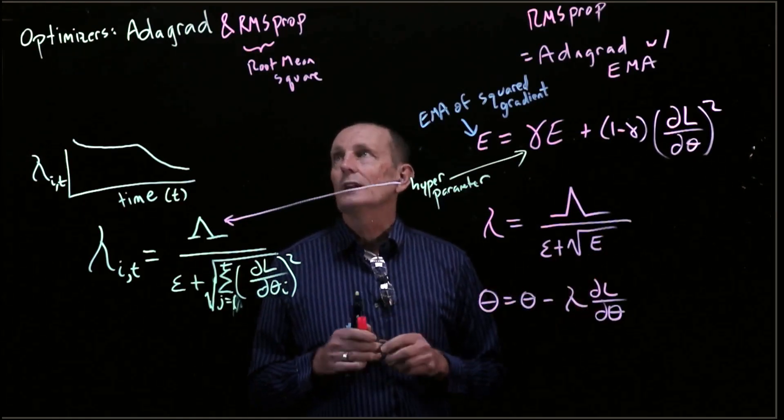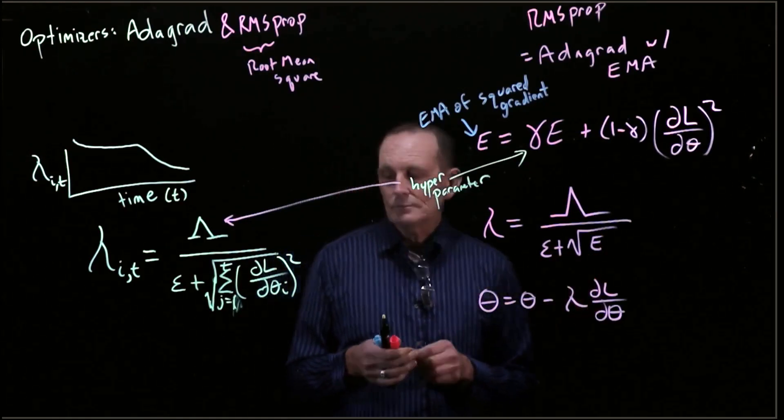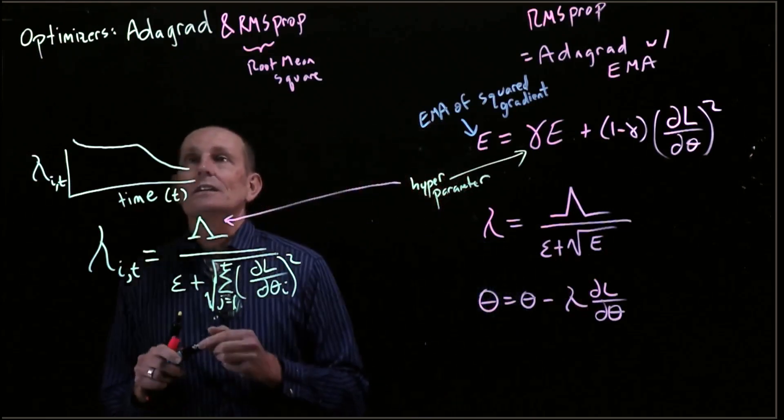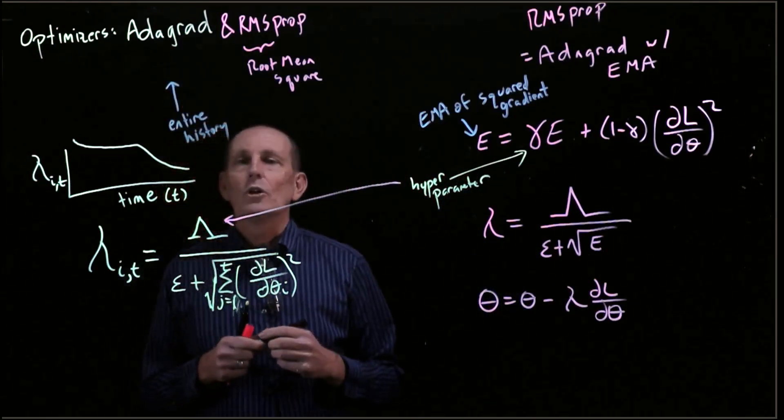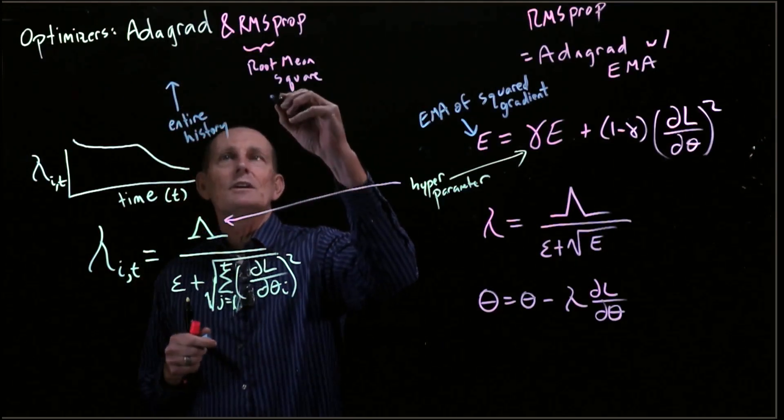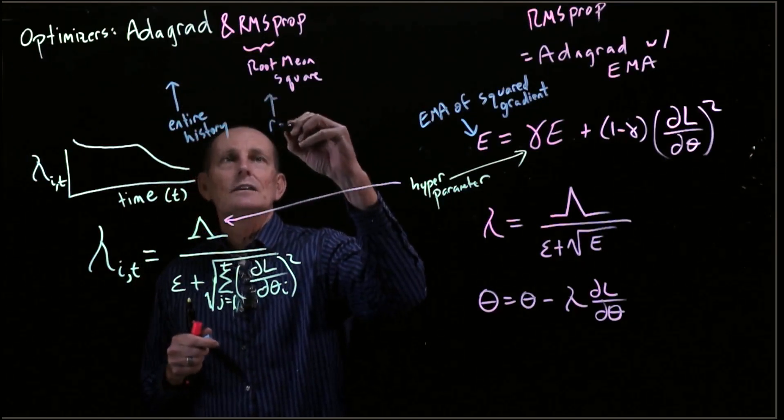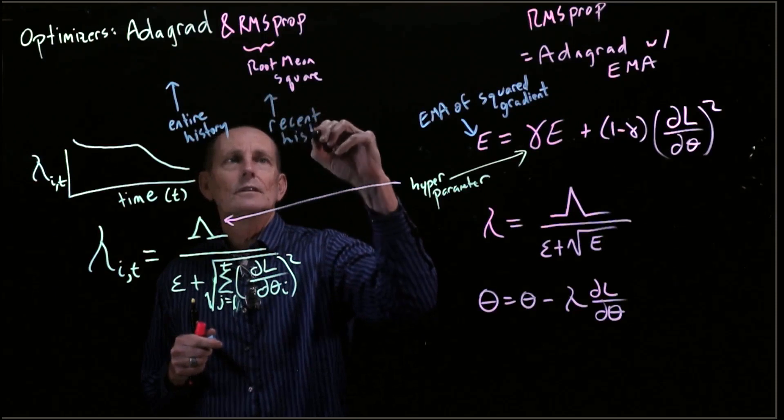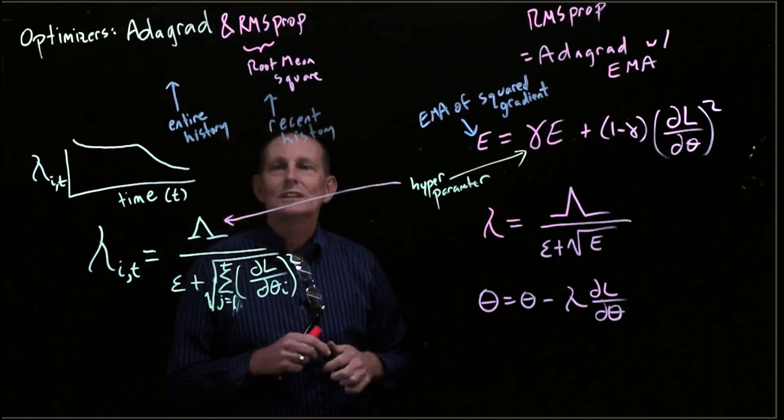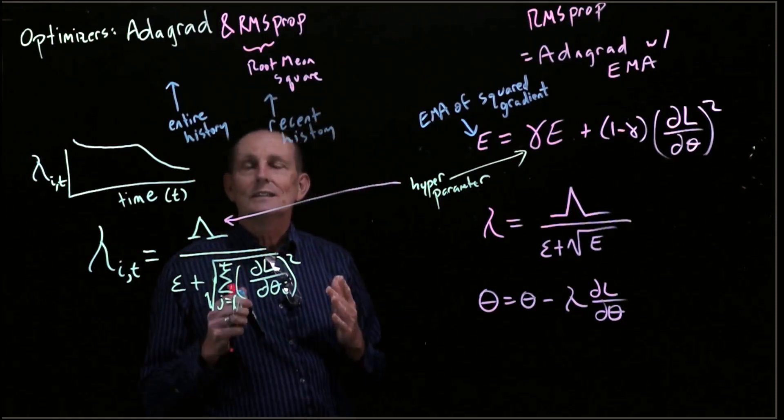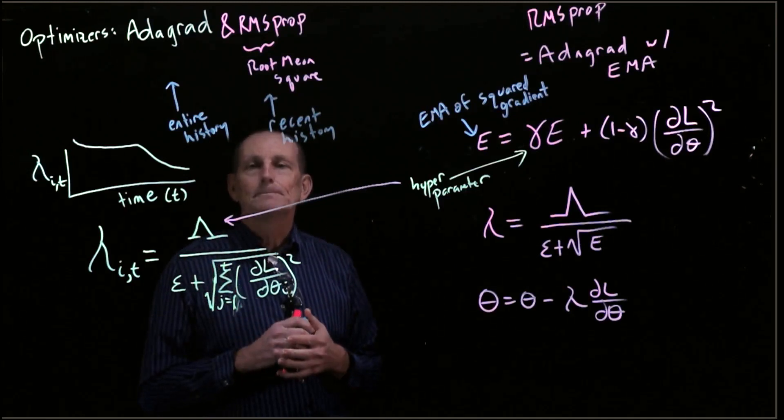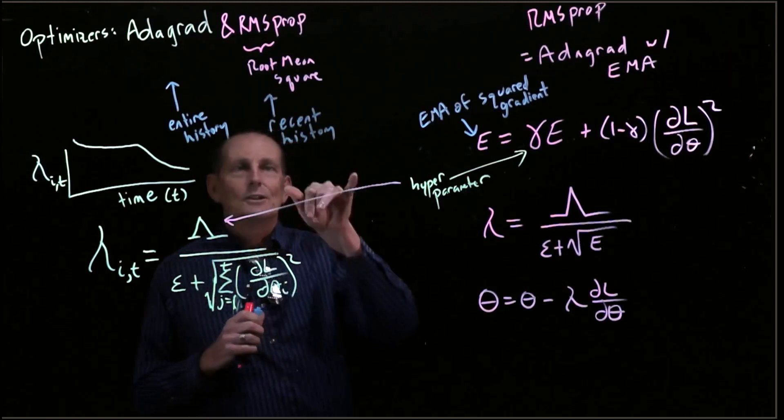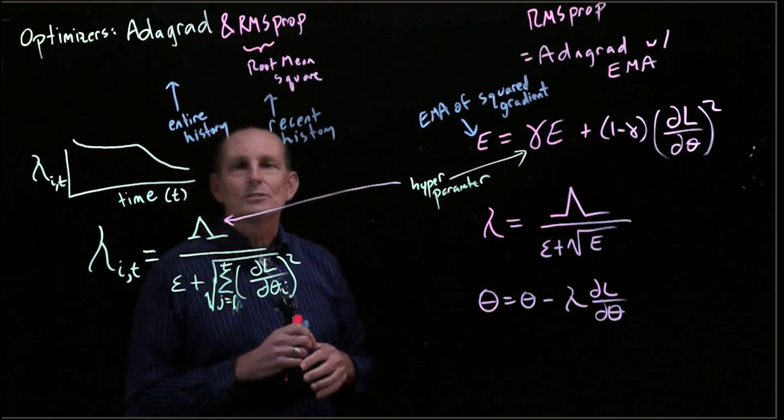So if we are looking at AdaGrad, AdaGrad is using the entire history where it's all weighted equally. The RMSProp uses instead the recent history. And really, that's not quite true. It's using the entire history, but since we are exponentially weighting it, it cares about the recent history more.